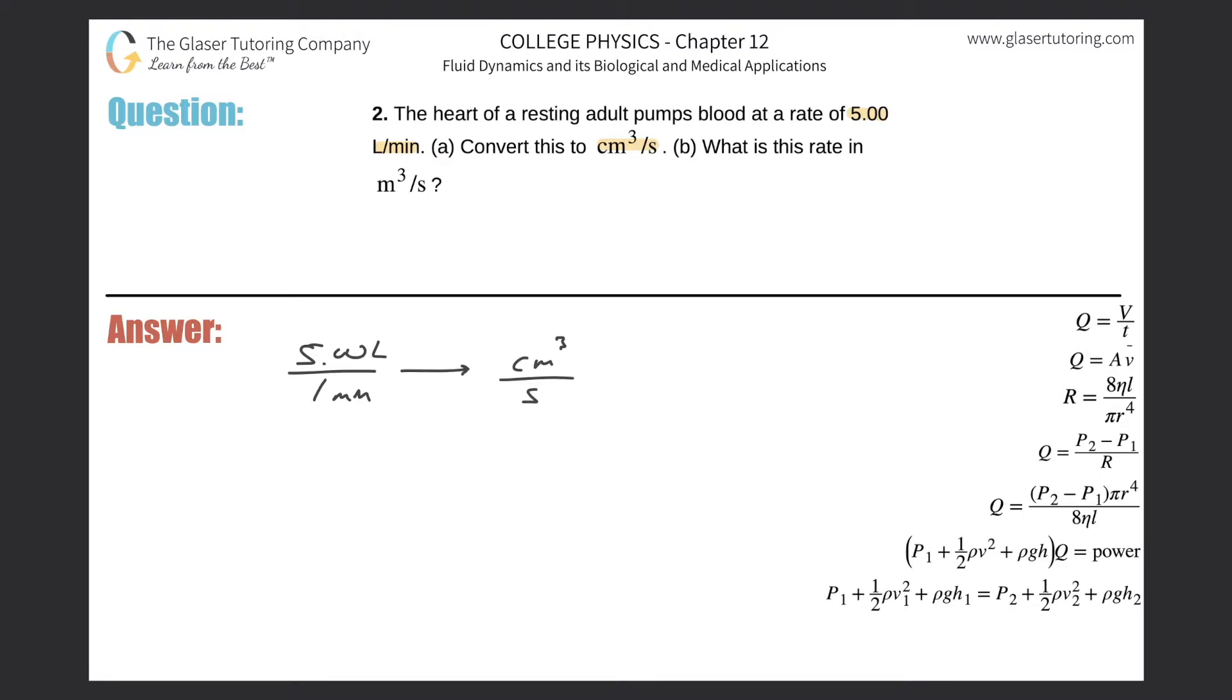You can do this in a couple of ways. First way: convert the five liters into cubic centimeters, then convert one minute into seconds, then divide the result. Or you can do it all at once. I'm going to do it all at once here. So it's five liters per one minute, and first I'm going to work with the liters - liters on the bottom.